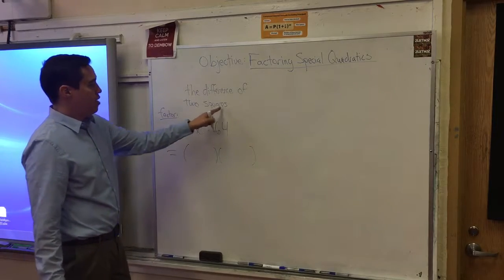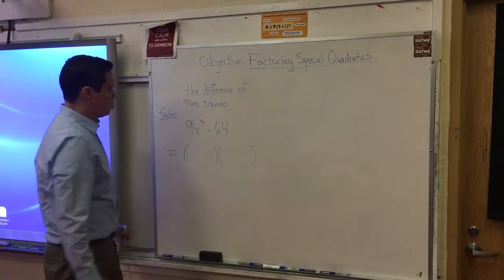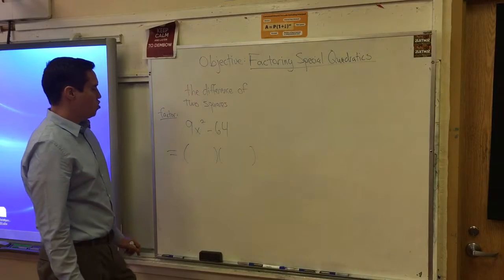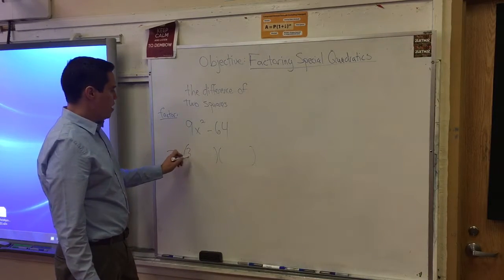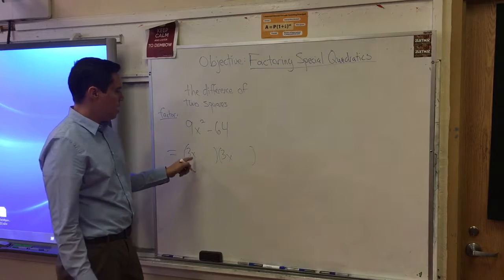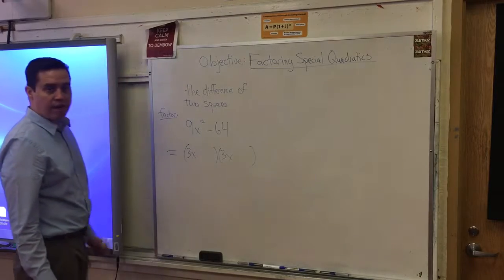Two squares, two terms. The first term is 9x squared. That is a perfect square. So I can put a 3x here and a 3x here, because when you multiply those two, 3x times 3x, you get 9x squared.